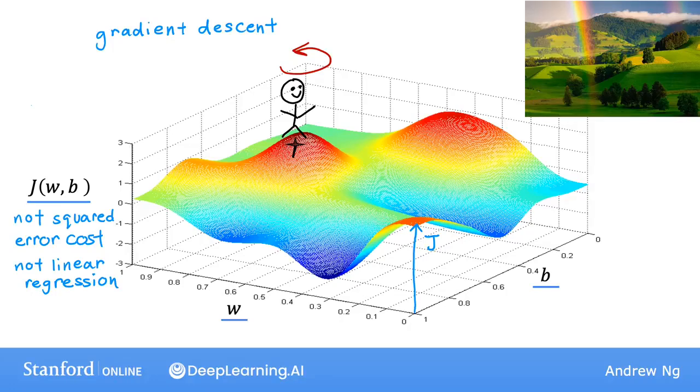Well, if you want to walk down this hill as efficiently as possible, it turns out that if you're standing at this point in the hill and you look around, you may notice that the best direction to take your next step downhill is roughly that direction. Mathematically, this is the direction of steepest descent.